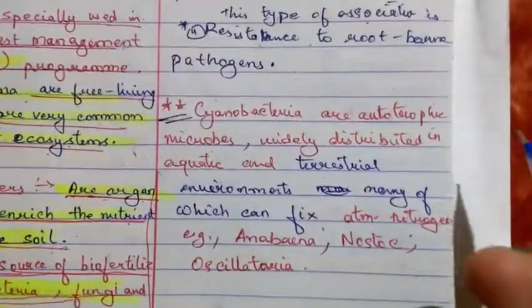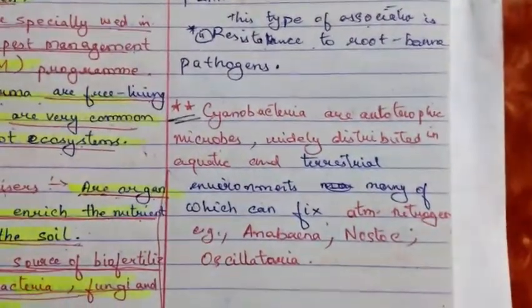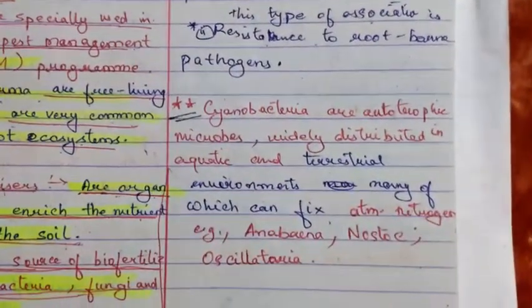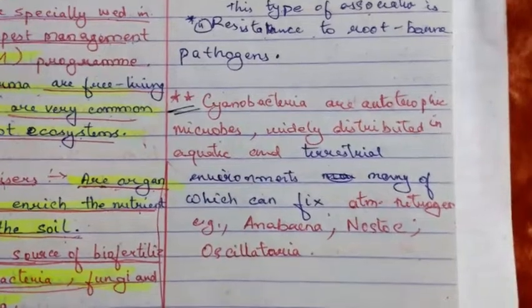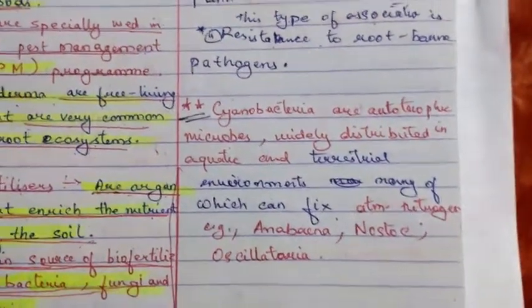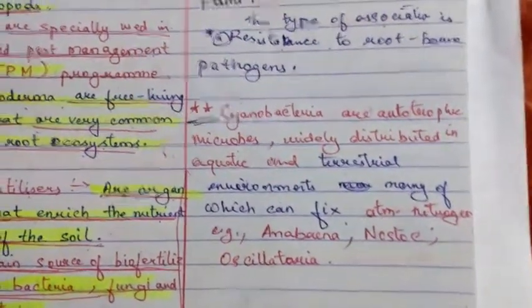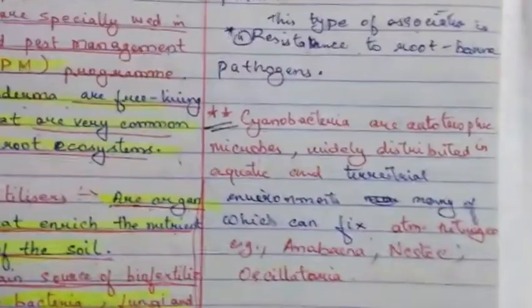Cyanobacteria are autotrophic microbes widely distributed in aquatic and terrestrial environments. Many of them can fix atmospheric nitrogen, such as Anabaena, Nostoc, and Oscillatoria.